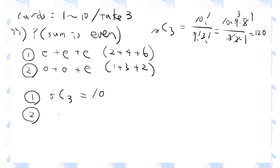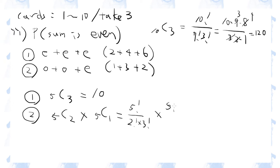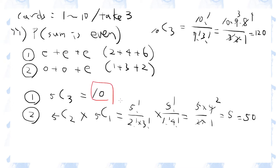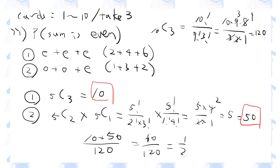For the second case, there are also 5 odd numbers between 1 and 10: 5 choose 2, and there are 5 even numbers so 5 choose 1. Adding these numbers together and dividing by 120, the final answer is 1 over 2.